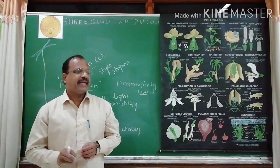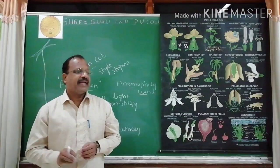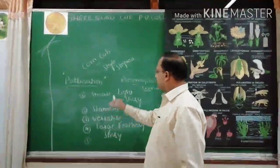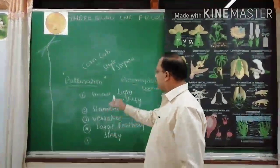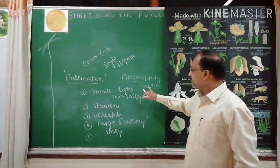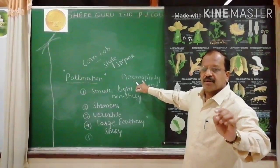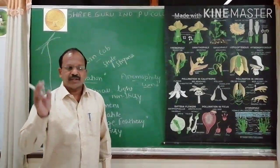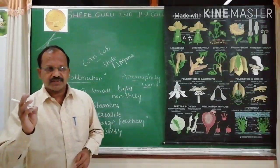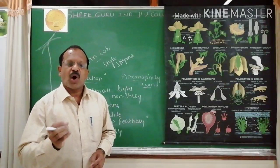Next is anemophily — pollination by the agency of wind. Anemophily is generally noticed in grasses, gymnosperms, sugarcane, corn, etc. Now look at the characters of anemophilous flowers.